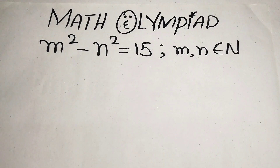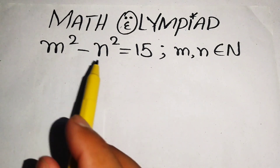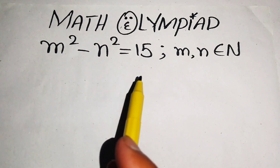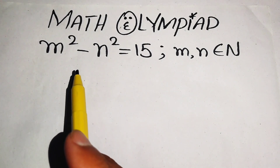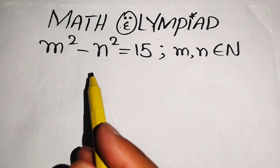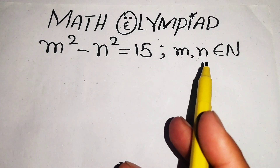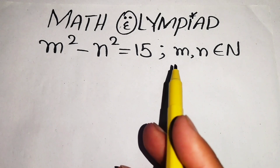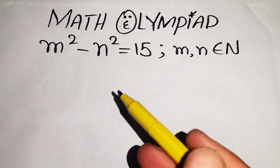Hello everyone, welcome. We solve this nice math Olympiad algebra problem: m squared minus n squared equals 15. We solve this problem for the values of m and n when m and n are natural numbers.